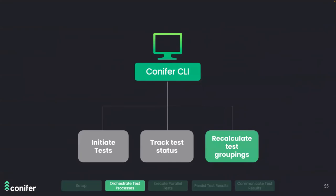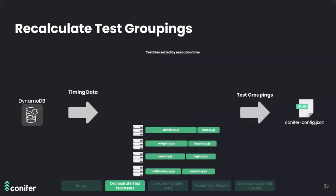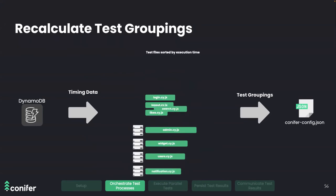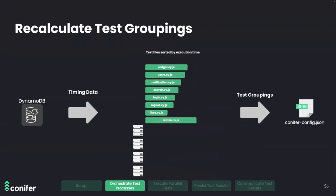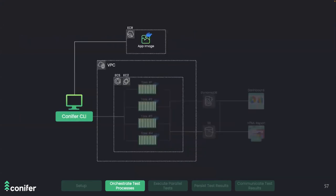Once the test run has concluded, we need to recalculate the test groupings. First, we retrieve the timing data from the persistent store — metadata from DynamoDB. Then we run the stage two algorithm discussed earlier, which generates the new test groupings. Finally, we save these new groupings in the configuration file, where they will be read and used on the next test run.